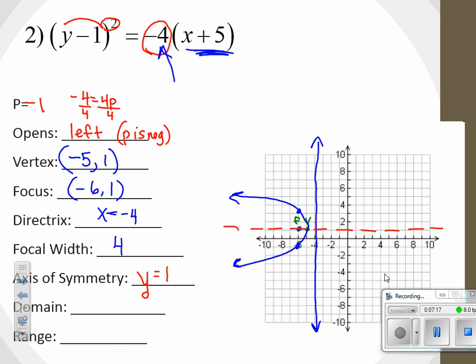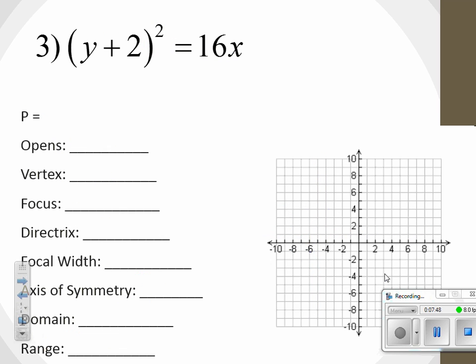The domain for this one and the range are going to switch roles because it's a y². So the range is y such that y equals all reals because you're going to touch every y in the world. But you're not going to touch every x. What x are you going to touch? -5 and lower. So x such that x is less than or equal to -5. That will be example number 2.